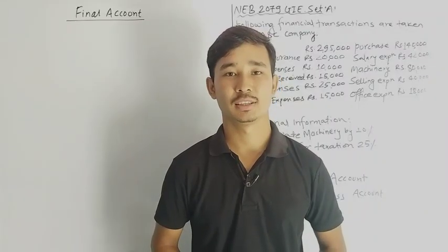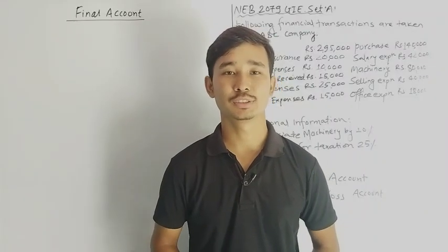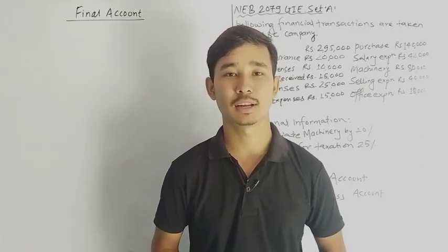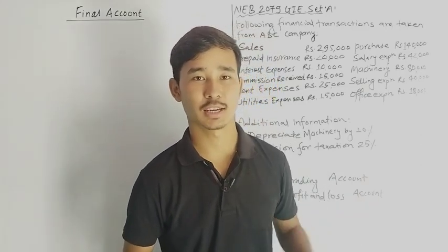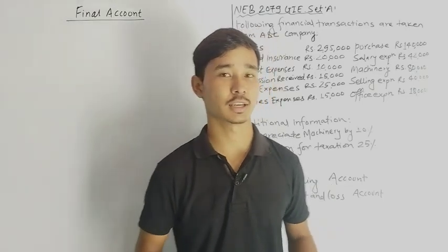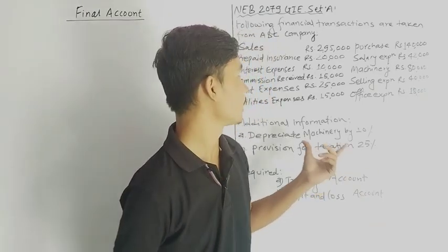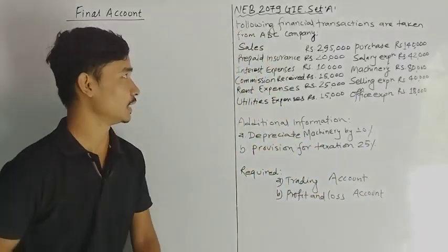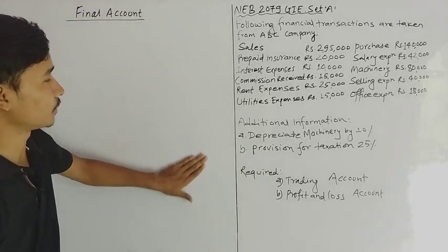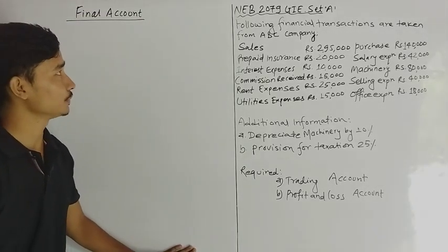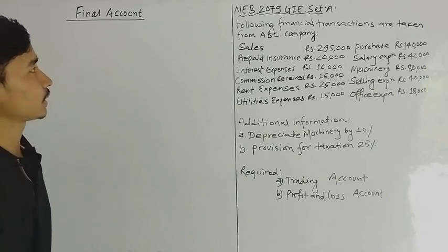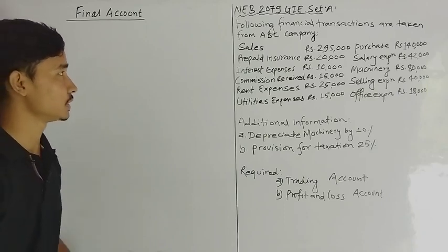As a quest video, we are going to do a final account. In this case, we are going to do a GIE Grade and Increment Exam for 2079. I am going to set a copy of the following financial transactions from ABC company.